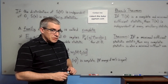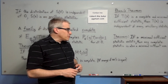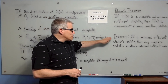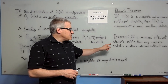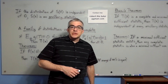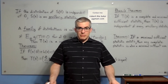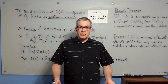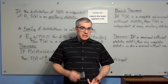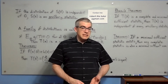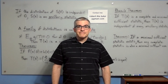There's one more relevant theorem: if a minimal sufficient statistic exists, then any complete statistic is also a minimal sufficient one. That's the most concise summary for sufficient statistic, minimal sufficient, ancillary statistic, complete statistic, and the relevant theorems. Thanks for watching.